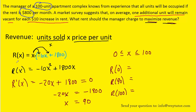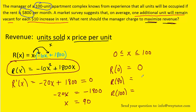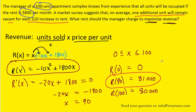Plugging those values into our revenue function: x = 0 gives revenue of $0; x = 90 gives a revenue of $81,000; and x = 100 gives a revenue of $80,000. From this method, we can see that selling 90 units will indeed maximize the revenue. The correct answer is x = 90 units.